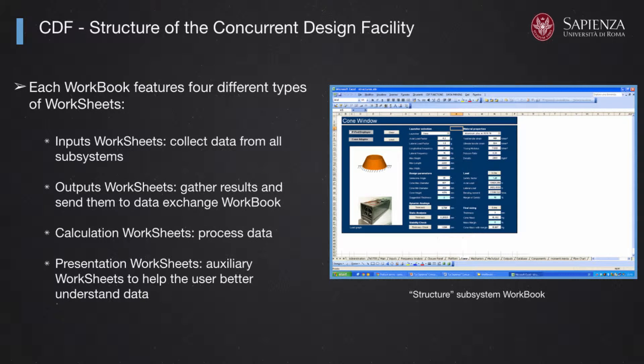In each workbook we have four different types of worksheets. The input worksheets collect data from all subsystems. The output worksheets gather results and send them to the data exchange workbook. The calculation worksheets process data, and we also have presentation worksheets — formerly called administration worksheets — which are auxiliary worksheets to help the user better understand and manage data during calculations.